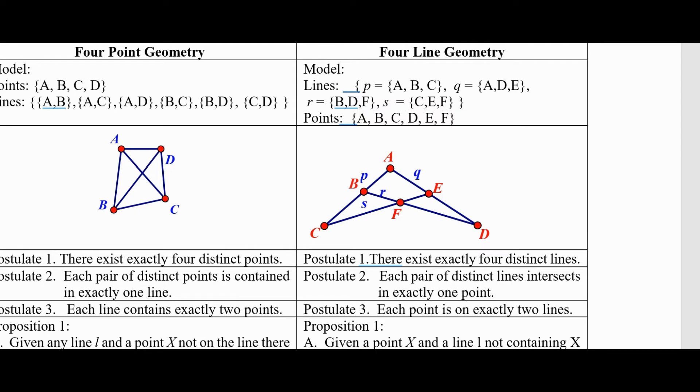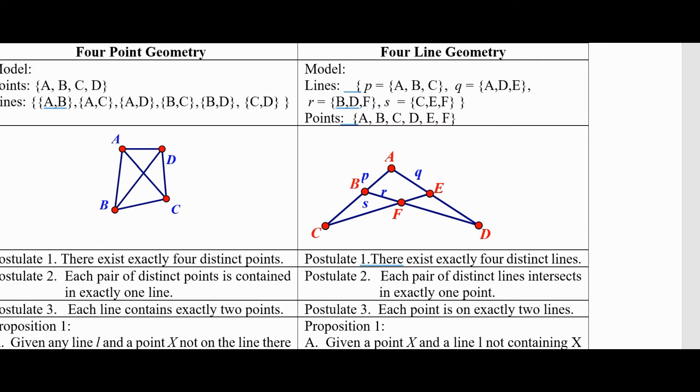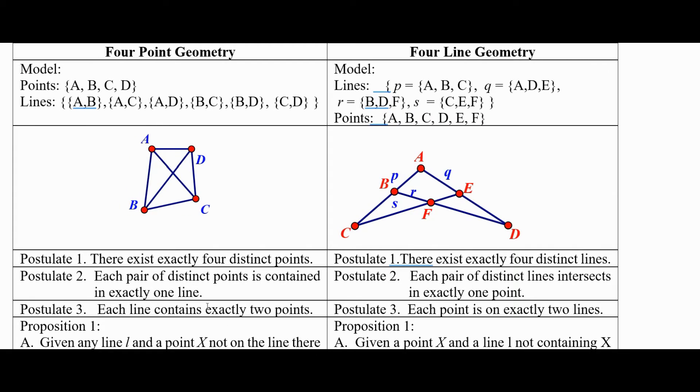Postulate three, in the original, let's say if we think of this original geometry as the four points, each line contains exactly two points. In the dual that says each, the line becomes points, the points become lines. So each point is on exactly two lines. That was postulate three.